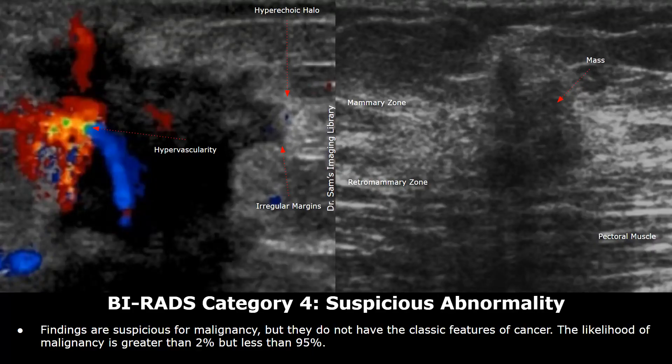Hello everyone, this is Dr. Sam and this video is about invasive ductal carcinoma on ultrasound. Invasive ductal carcinoma is the most common type of breast cancer. On ultrasound, it is often categorized as BI-RADS 4 or 5.